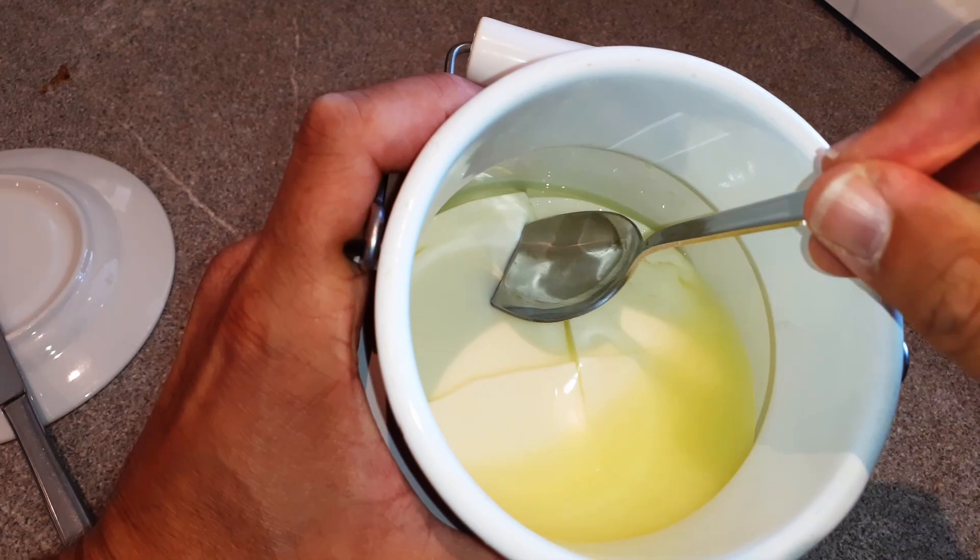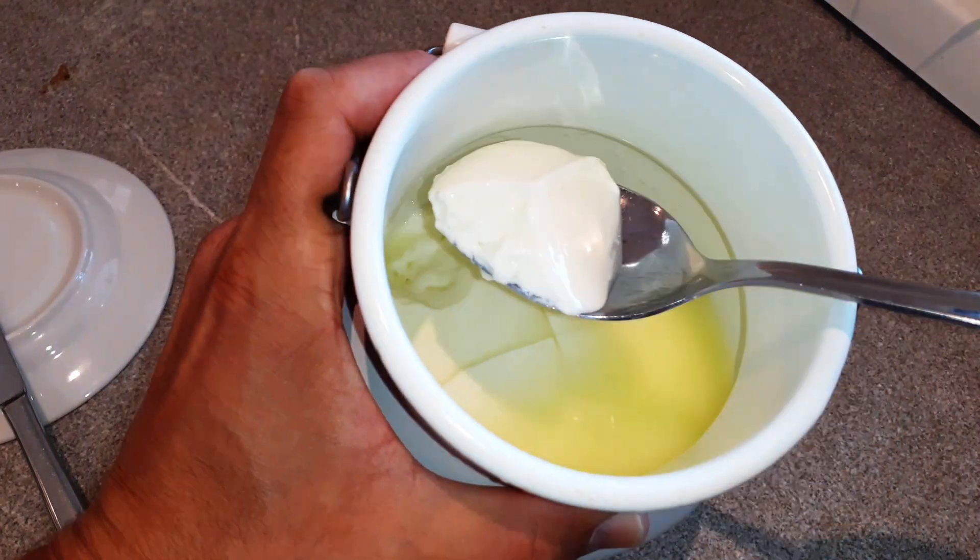Why is it that milk spoils so quickly when you leave it outside of the refrigerator, but yogurt doesn't? Well, the short answer is this: because, and this might surprise you, yogurt is already spoiled, and something that's spoiled cannot spoil more.